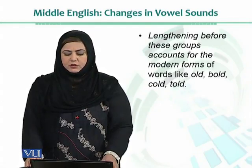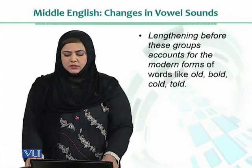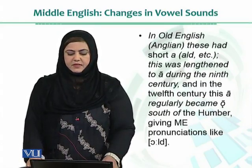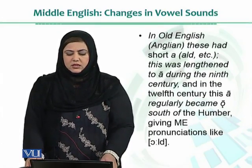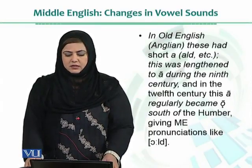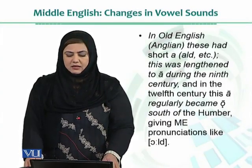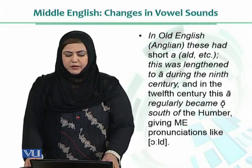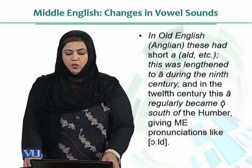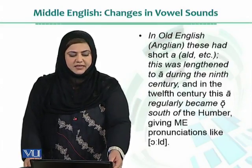Lengthening before these groups accounts for the most modern forms of words such as old, bold, cold, told, etc. In Old English, these had short vowel sounds. For example, 'old' was lengthened to an A-sound during the 9th century, becoming AL, and in the 12th century this regularly became O, as it is produced in 'old' as we produce it now, and this became a regular feature.